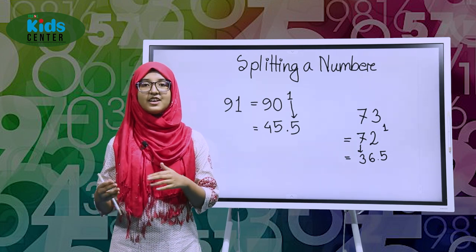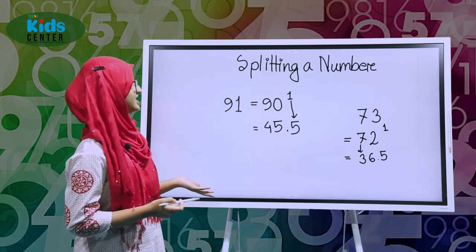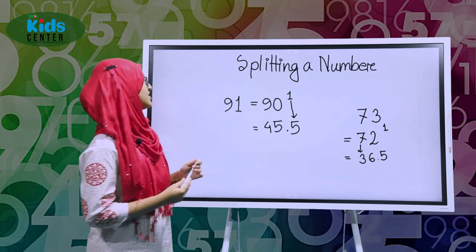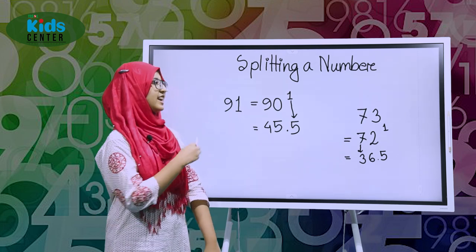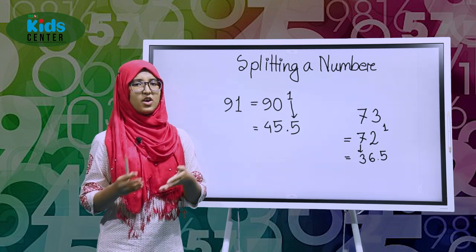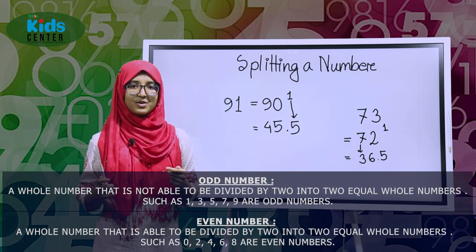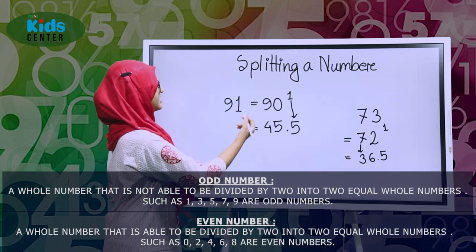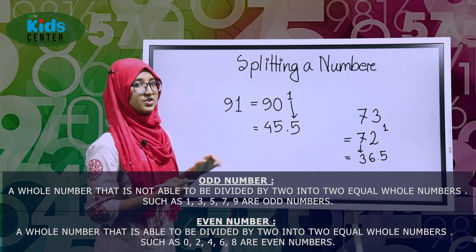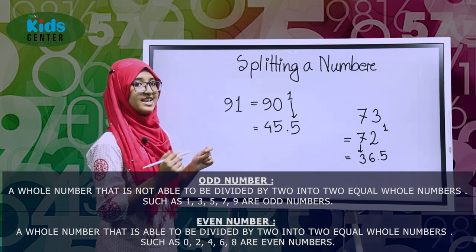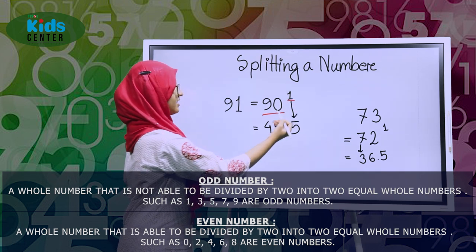So let's just start. First we took the number 91. Now 91 is an odd number, right? It's not an even number. To make it an even number we have to write the lowest even number less than 91, so we will get 90. We just wrote 90, and now we have to split this one.